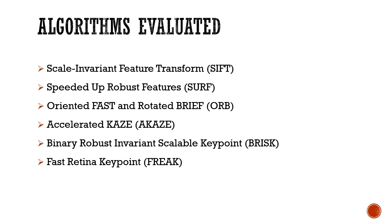The algorithms evaluated in our experiment involve Scale Invariant Feature Transform (SIFT), Speeded Up Robust Features (SURF), Oriented FAST and Rotated BRIEF (ORB) which is a combination of a FAST detector and a BRIEF descriptor, Accelerated KAZE (AKAZE), Binary Robust Invariant Scalable Keypoints (BRISK) which uses a handcrafted sampling pair, and Fast Retina Keypoint (FREAK).